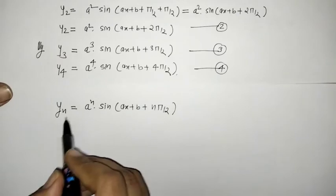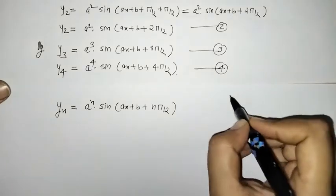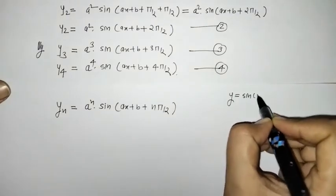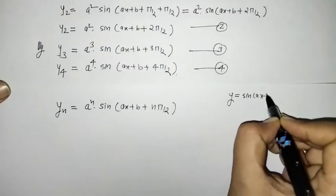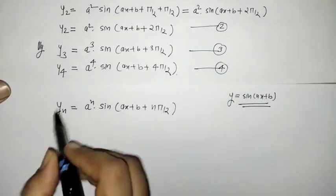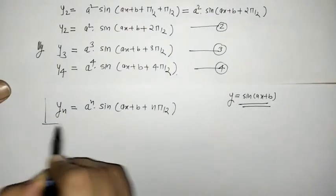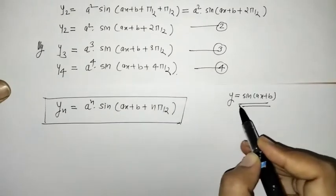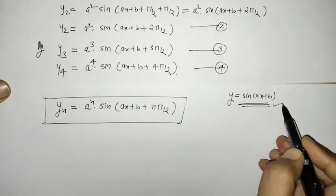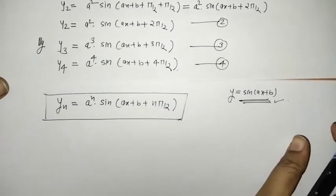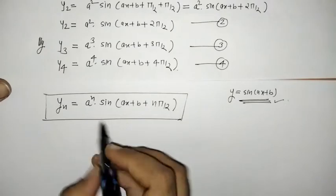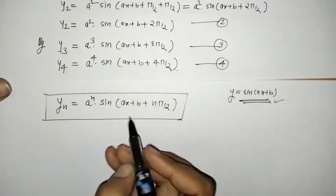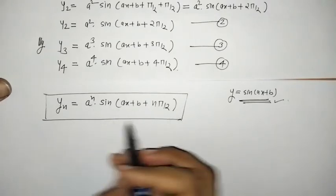Thus, the nth derivative of y = sin(ax + b) is given by yn = aⁿ·sin(ax + b + nπ/2). By putting any value of n we can find the required derivative.